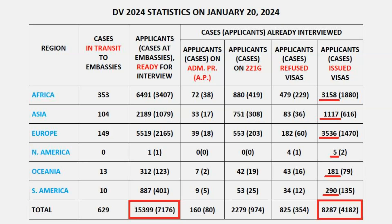As usual, I'm not going to go into all of this data — just a couple of items I do a commentary on. Firstly, the number of visas issued so far, found in the final column. For Africa, 3,158 diversity visas have been issued. For Asia, 1,117. For Europe, 3,536. For North America, 5. For Oceania, 181. And for South America, 290.